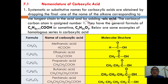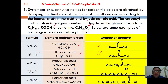Here are some examples of the homologous series in carboxylic acids. If you have CH₂O₂, you have methanoic acid. With the formula C₂H₄O₂, you have ethanoic acid. Three carbons gives propanoic acid. C₄H₈O₂ is butanoic acid, and C₅H₁₀O₂ is pentanoic acid, each with their corresponding molecular structures.